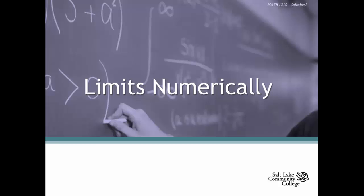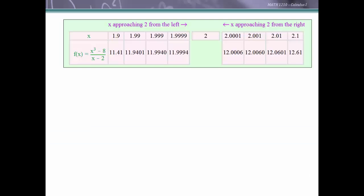We are going to look at limits numerically. Let's look at a function f(x) = (x³ - 8)/(x - 2) and look at a table of values that we would get as we substitute various x values in this function. First we're going to approach 2 from the left using 1.9, 1.99, and so forth, getting closer and closer to 2, and we see that these function values appear to be approaching the value of 12.